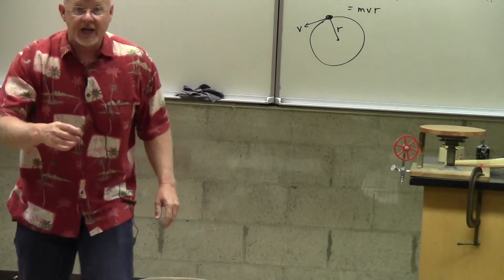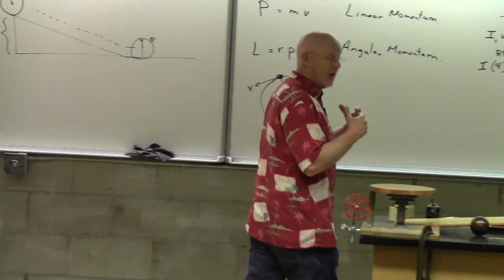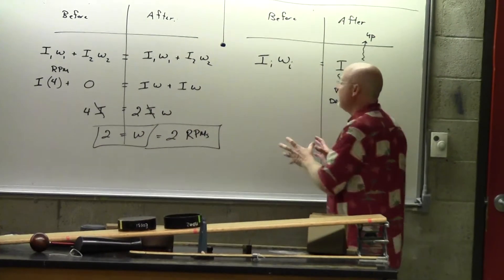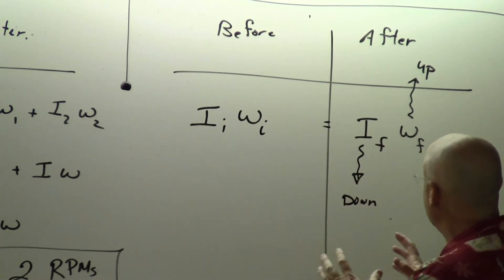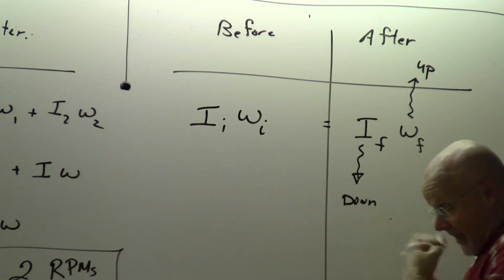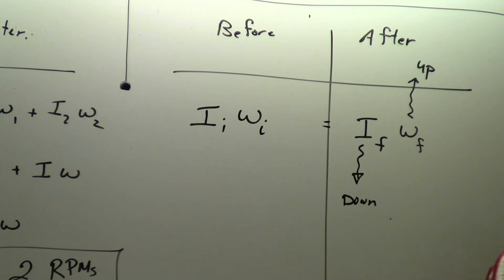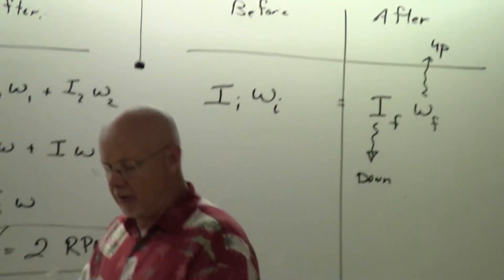Using conservation of angular momentum: rotational inertia depends not only on mass but also on where the mass is located. By moving my arms in and out, I change the rotational inertia, and the corresponding angular speed must change to keep angular momentum constant. This is an effect we couldn't see with just translational momentum — we couldn't change the mass, but with rotational momentum we can effectively change the mass distribution.